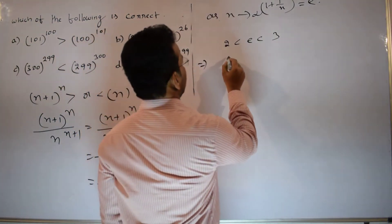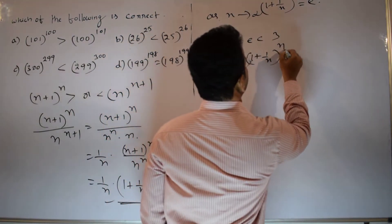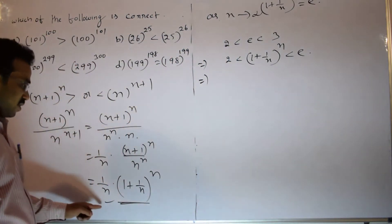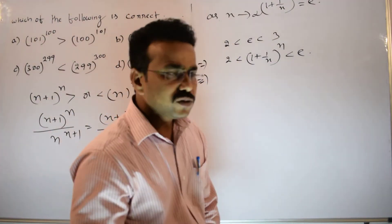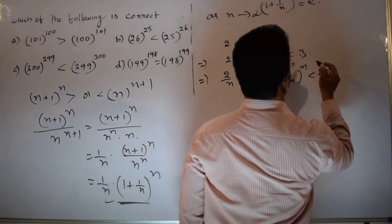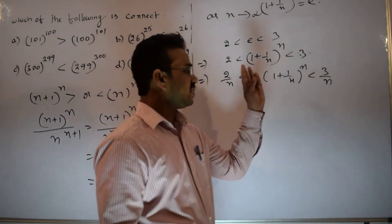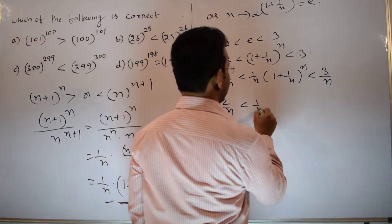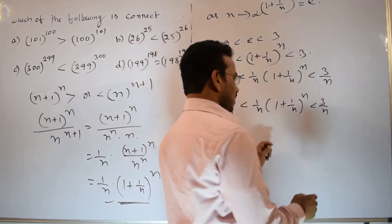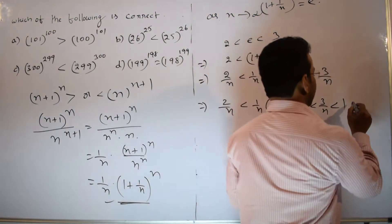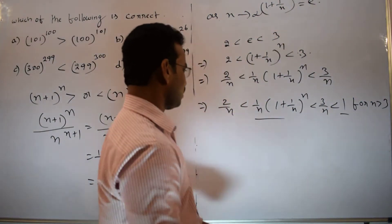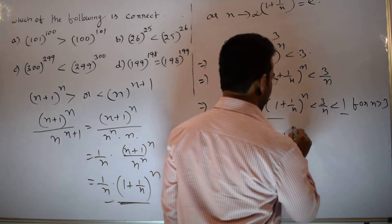From this, we can write 2 < (1 + 1/N)^N < 3, keeping in mind that N should be indefinitely large. Now, we require the expression (1/N)(1 + 1/N)^N. Multiplying both sides by 1/N gives: 2/N < (1/N)(1 + 1/N)^N < 3/N. For N greater than 3, for example N = 4, 3/4 is always less than 1. So this implies (1/N)(1 + 1/N)^N < 1.